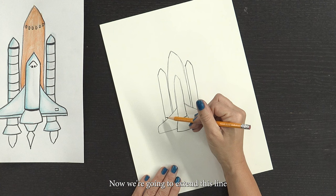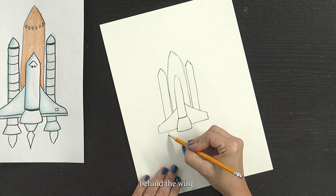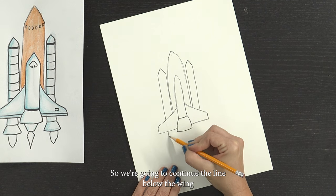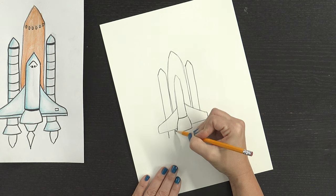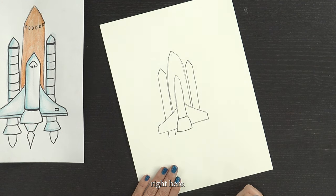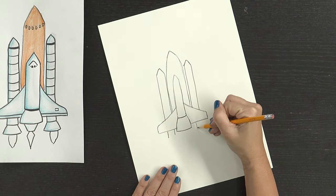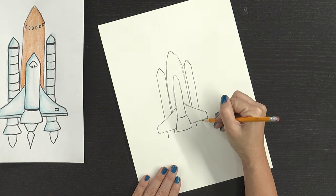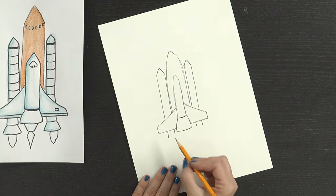Now we're going to extend this line behind the wing. So we're going to continue the line below the wing. Right here. Same thing on this side. Great job.